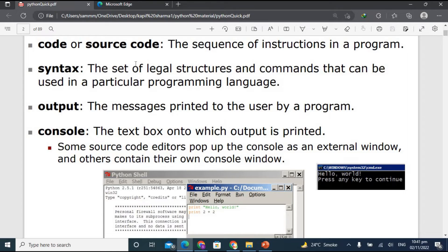So now let's move on and see what is output. The messages printed to the user by a program. As you can see here, hello world, it is the output and these are messages which are printed to the user by the program. We write a program where we type some commands to print hello world, and this is the command prompt or the shell, and here we got our output.